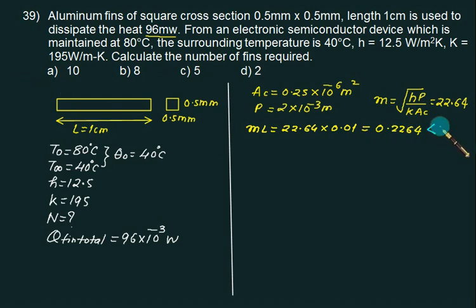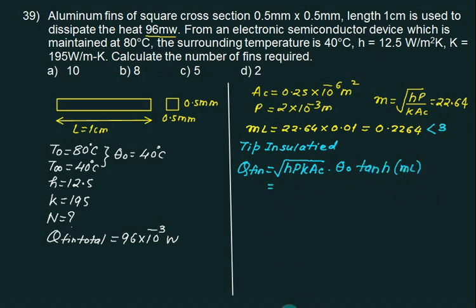Our model of fin is a short fin or tip insulated, so formula for this case is the heat transfer from single fin Q fin equals to under root of HPKAC into theta 0 into tan hyperbolic of ML. You can substitute all data and your answer is 9.84 times 10 to the power minus 3 watts. So we know the heat transfer from single fin.